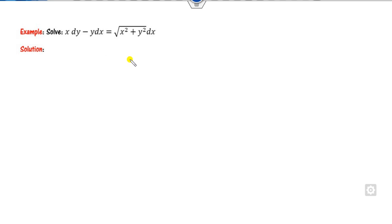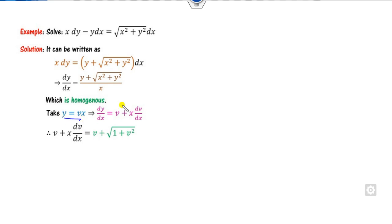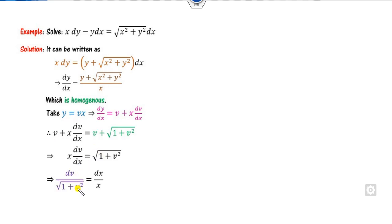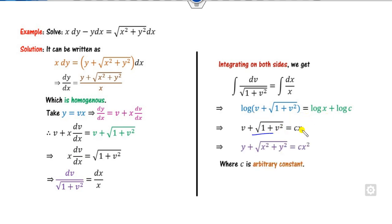For the third example, find dy/dx and check for homogeneity. This has degree 1 under the root and degree 1 in the other term, so both numerator and denominator have the same degree — it is homogeneous. Take y = vx and substitute. The v terms cancel. Separate variables and integrate using log(ax). Substituting v = y/x gives the required solution.